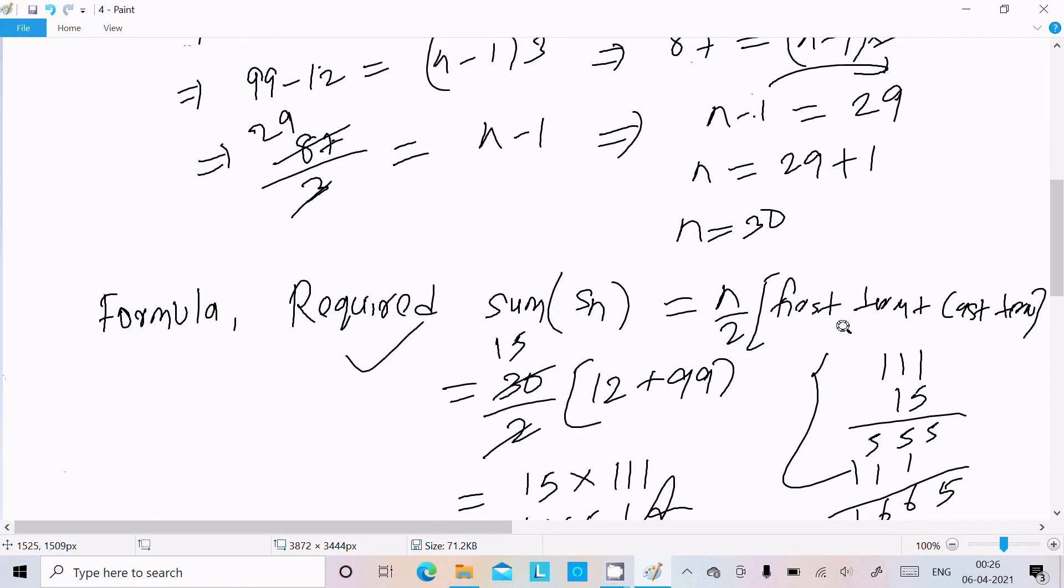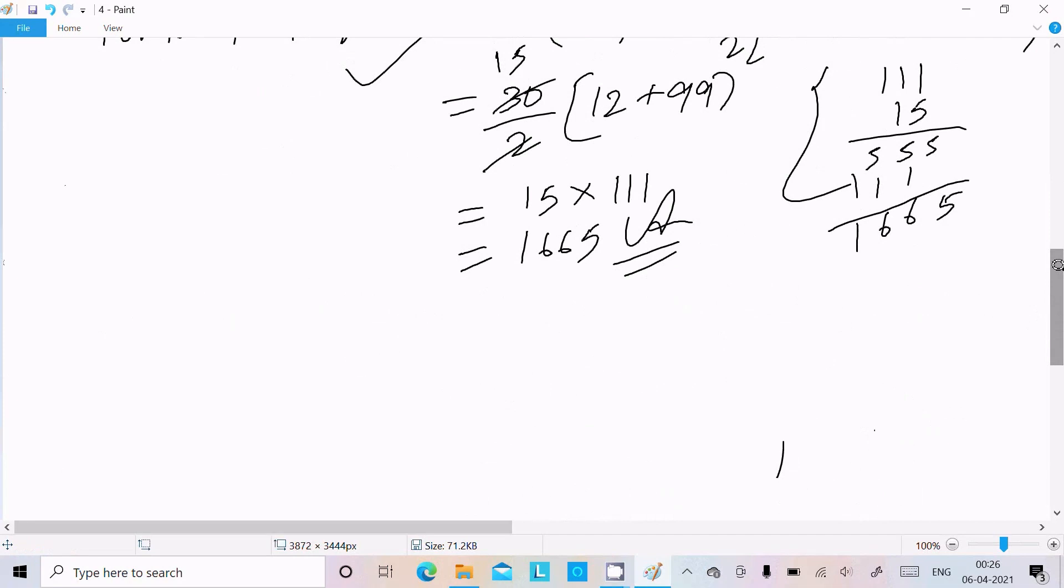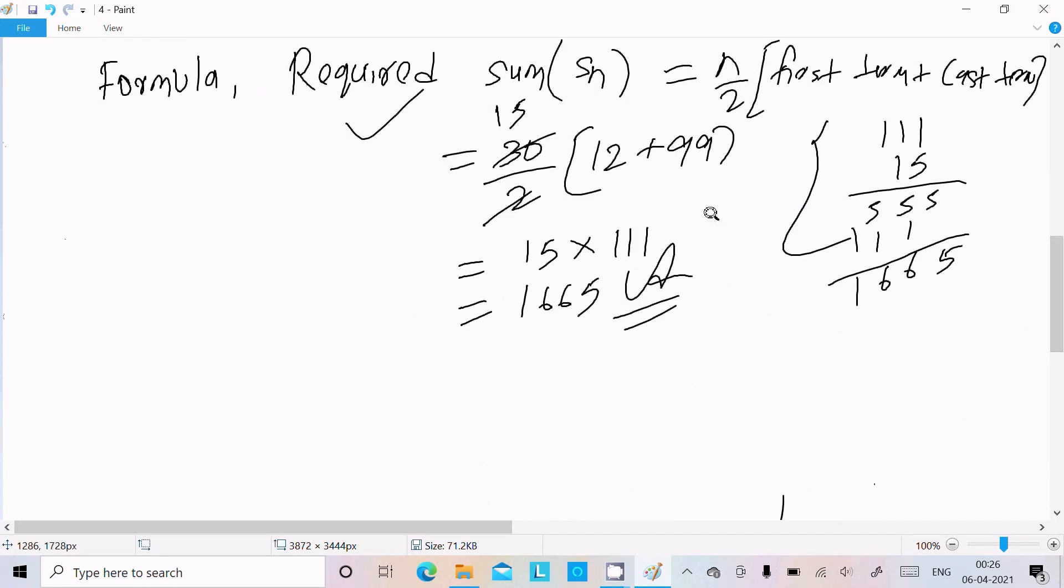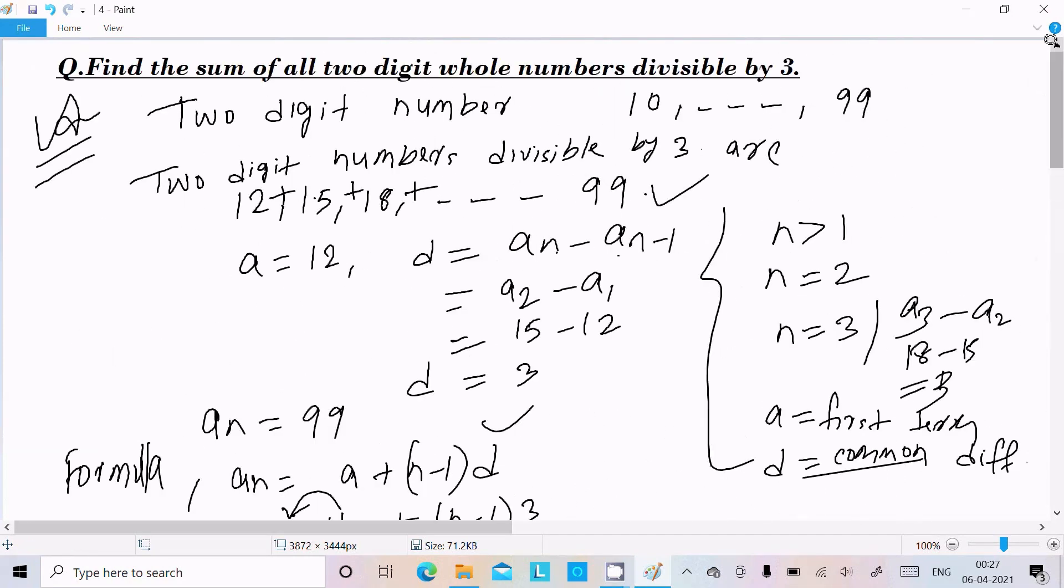use this formula required sum: S_n equal to n by 2, first term plus last term. So here n by 2, use the value, solve. You can get easily the output. So here if question comes like sum of all two-digit numbers,